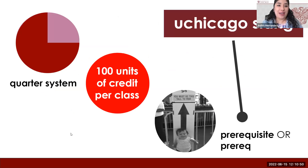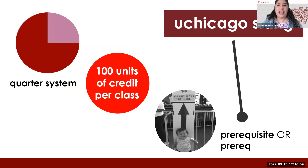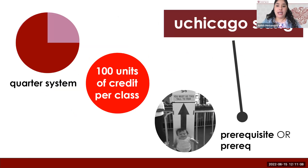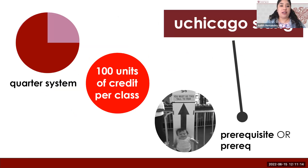Hi, everyone. I'm Judith Hernandez, one of the academic advisors here at the college. In my section, I'll be talking to you about UChicago slang, which will help you get familiar with your advising appointments, registration, and resources here at the college. We have three terms I want to talk about: the quarter system, what's a unit, and what is a prerequisite. The University of Chicago follows a quarter system — nine weeks plus finals week. We have three quarters: autumn, winter, and spring. Summer is optional. A unit is a credit received for taking a course. Typically, students receive 100 units of course credit for most undergraduate courses. At the end of your four years, you want to have a total of 4,200 units, equivalent to 42 courses.